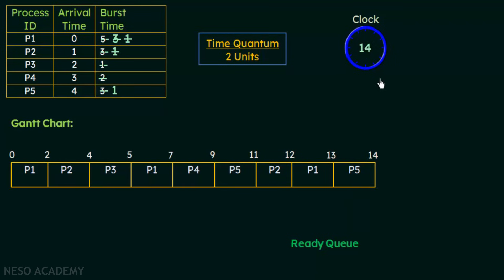At time 14, P5 completes its execution because it had a remaining burst time of only 1 unit. There are no more processes waiting in the ready queue, which means all processes have completed their execution. All burst times are accounted for and the ready queue is empty at the 14th unit of time.